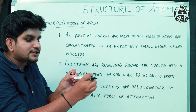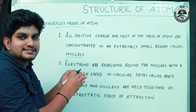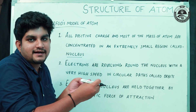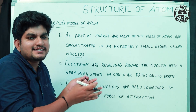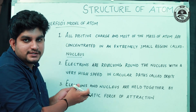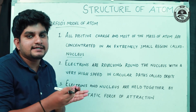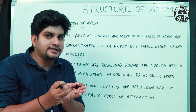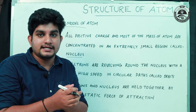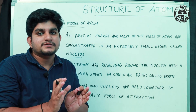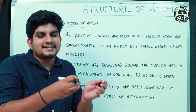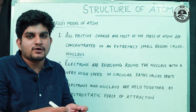The electron is held in orbit by nuclear attraction — there is a force of attraction between the electron and the nucleus. This is Rutherford's model of the atom, also known as the Planetary Model.